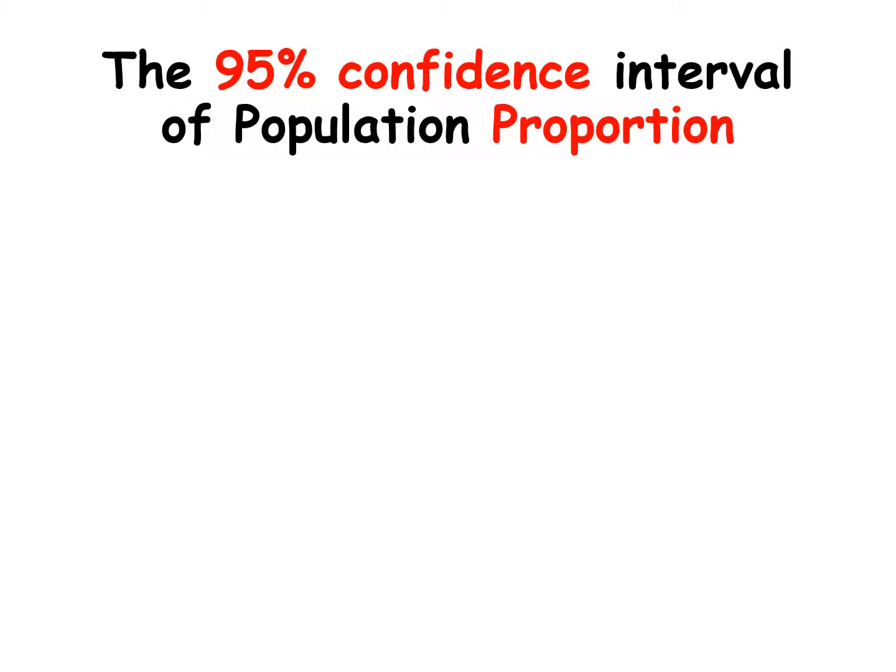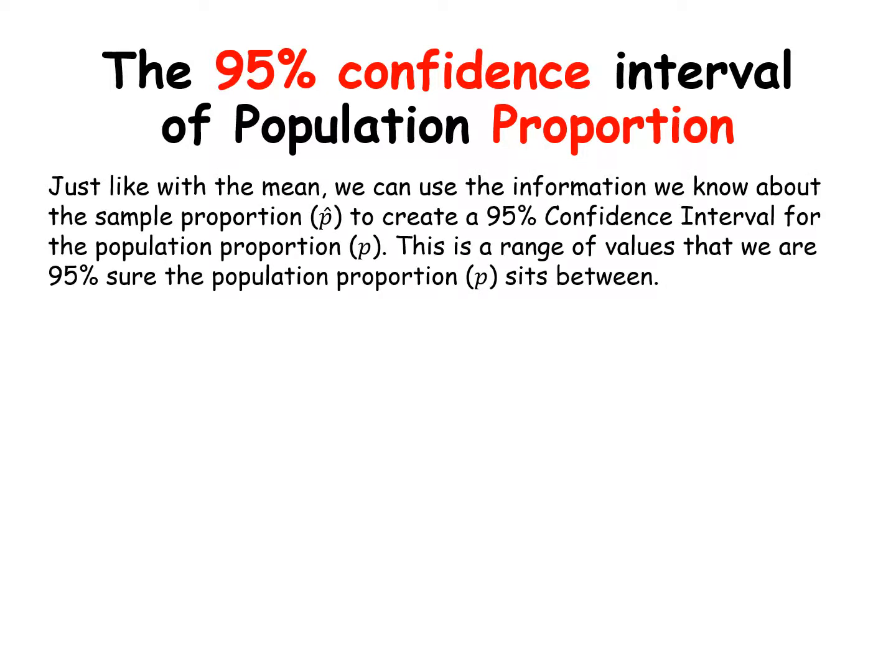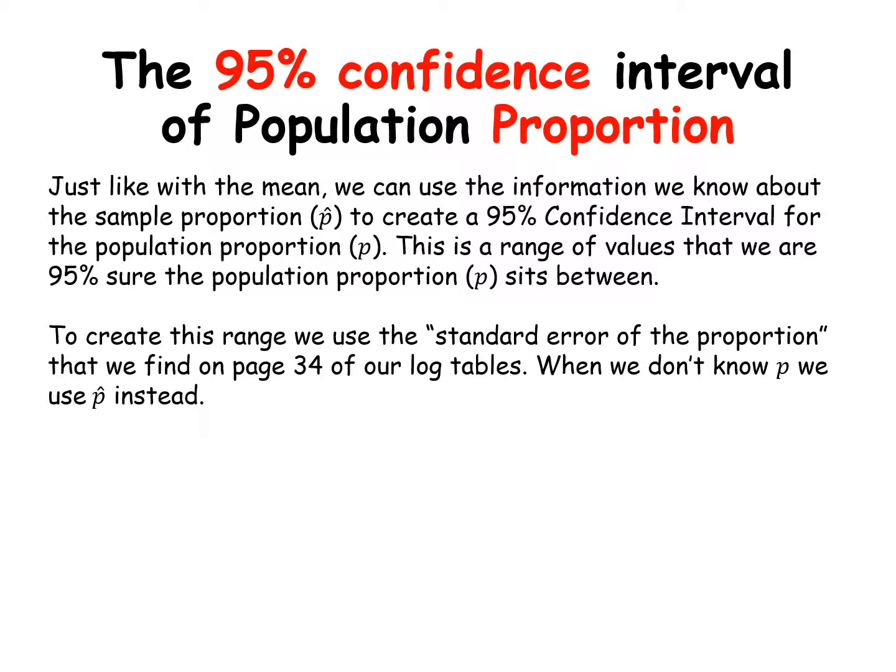So now we're going to talk about the 95% confidence interval of the population proportion. Just like with the mean, we can use the information we know about the sample proportion p-hat to create a 95% confidence interval for the population proportion p. This is a range of values that we are 95% sure the population proportion sits between. To create the range, we're going to use the standard error of the proportion found on page 34 of our log tables.